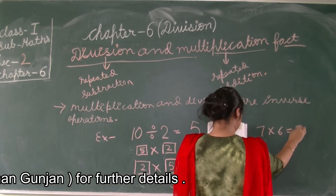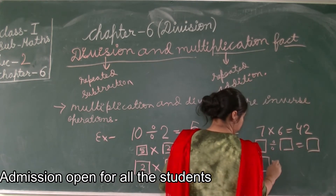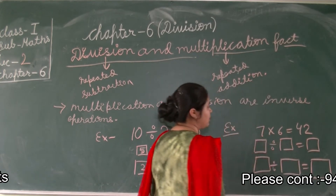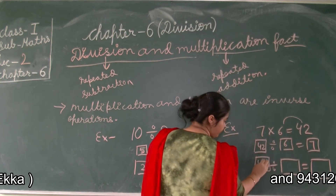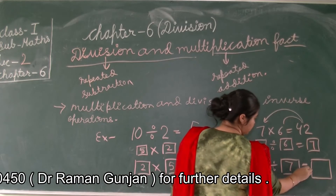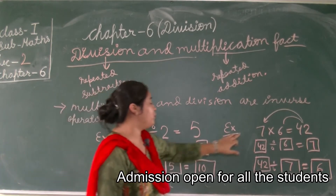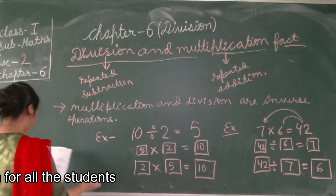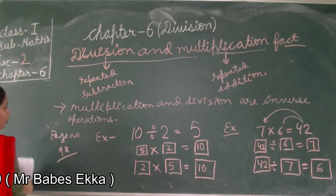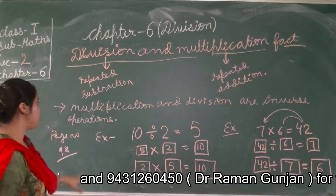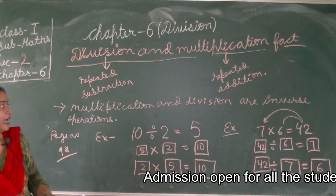In the next example, 7 multiplied by 6 equals 42 is the multiplication fact, and you have to write two division facts. The first division fact is 42 divided by 6 equals 7, and the second division fact is 42 divided by 7 equals 6. So for one multiplication fact we get two division facts. All questions on book page number 98 are based on division and multiplication facts.